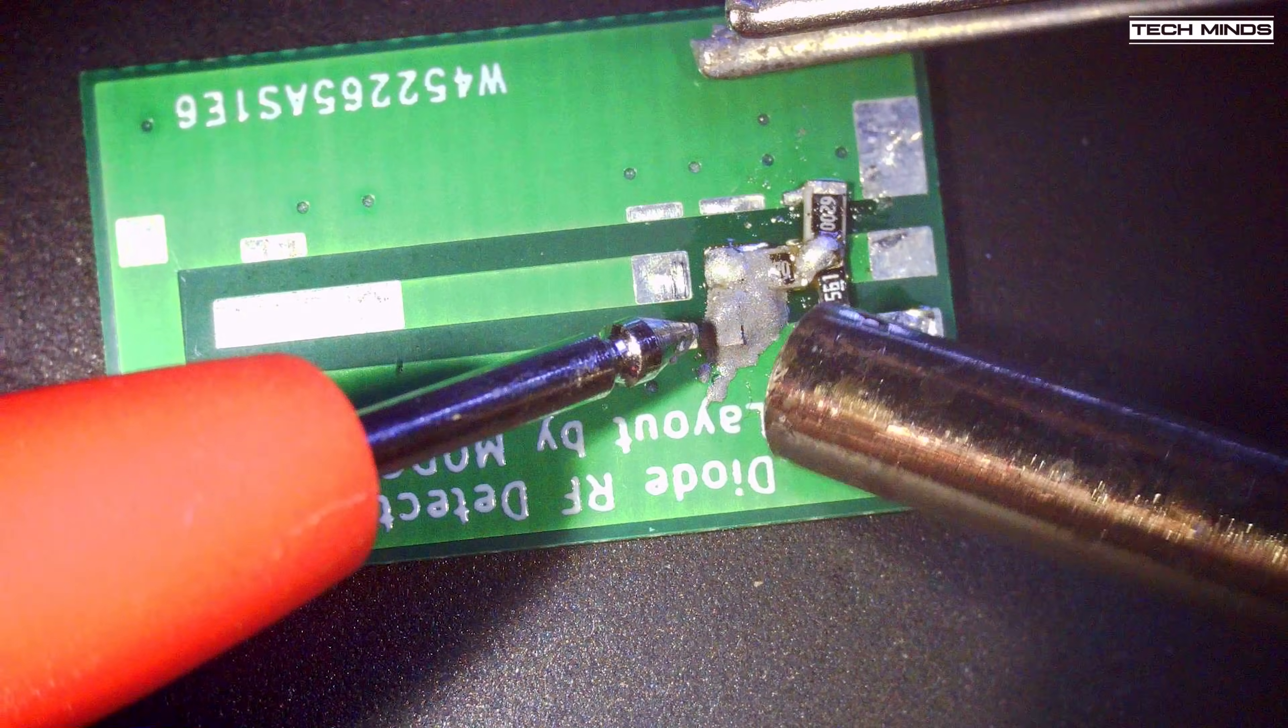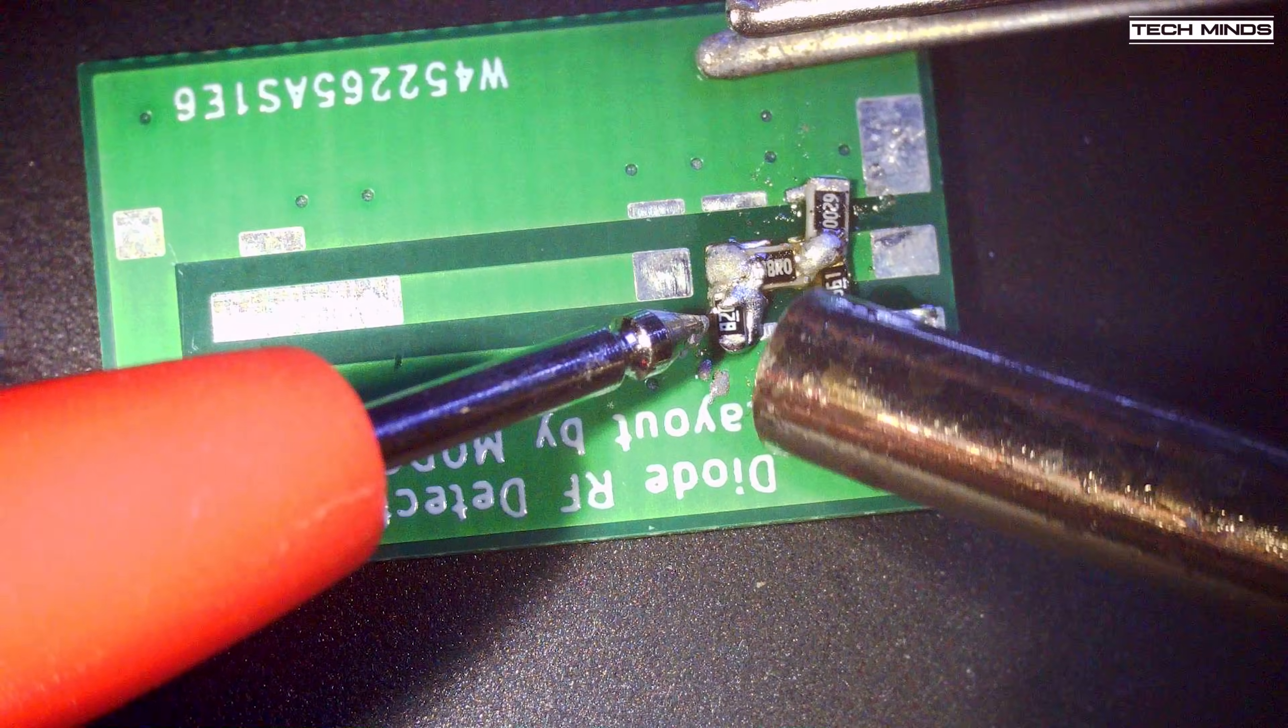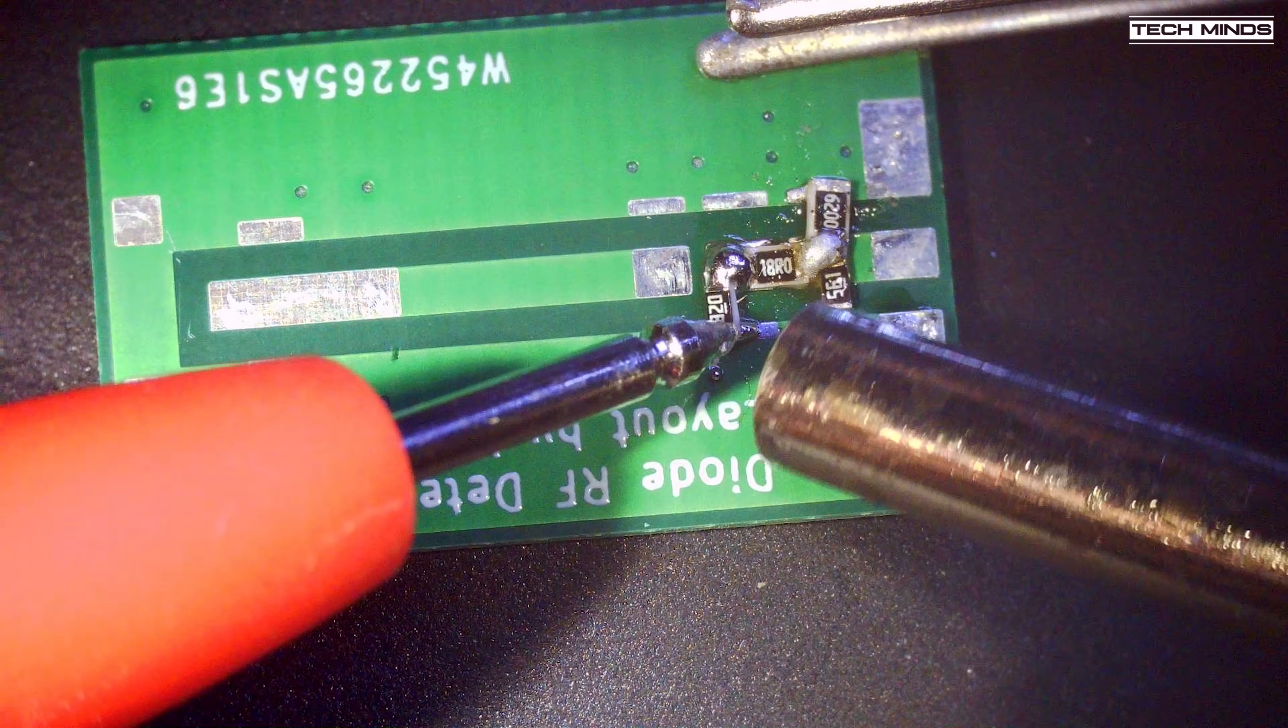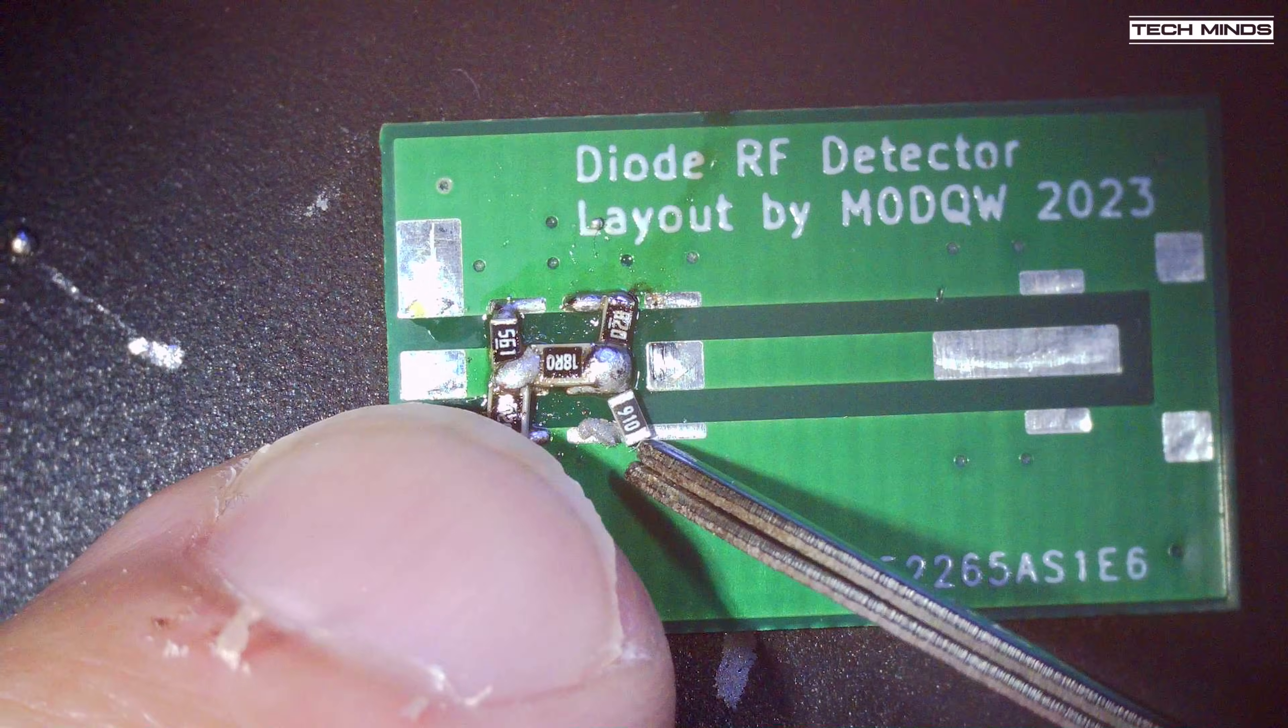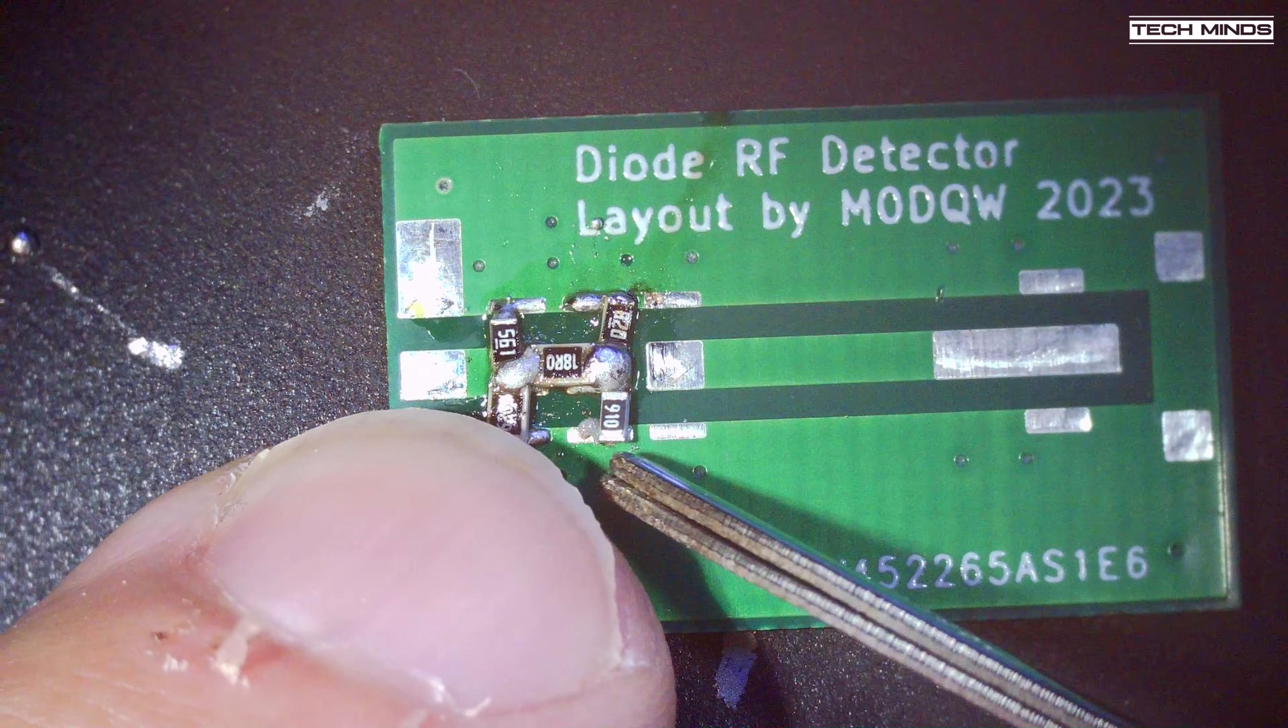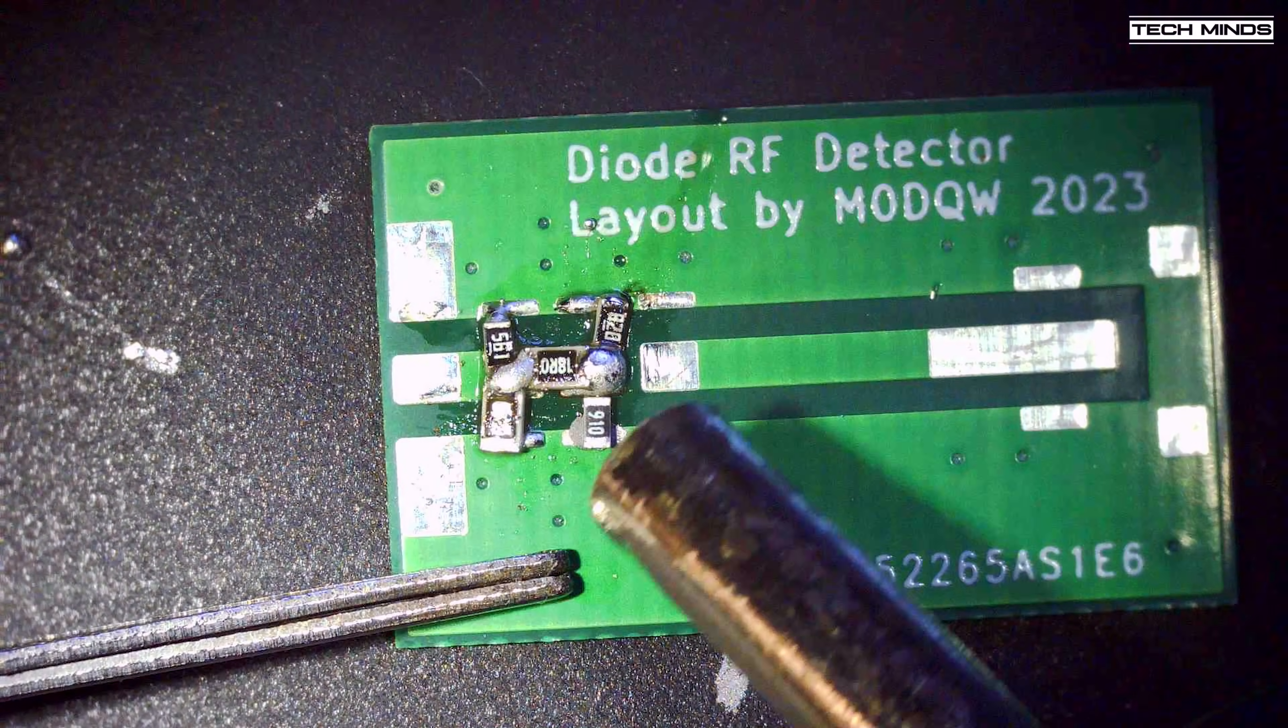Now for this, I use solder paste and a hot air reflow tool. It doesn't look particularly neat and clean under the microscope, but the components are just so small and I don't really do this all the time. What's nice to watch is that when the solder paste starts to melt, the components just seem to pull themselves into place.